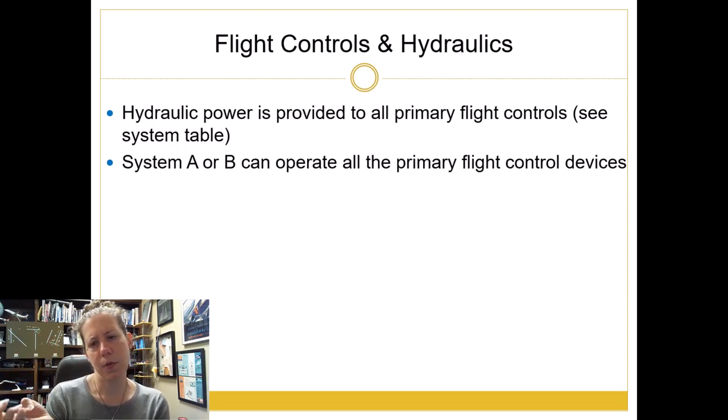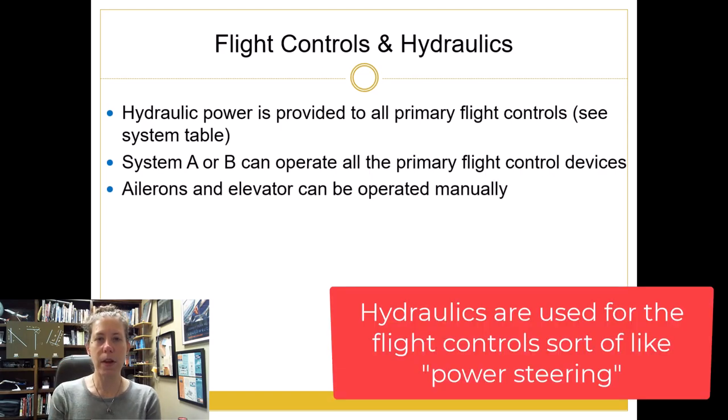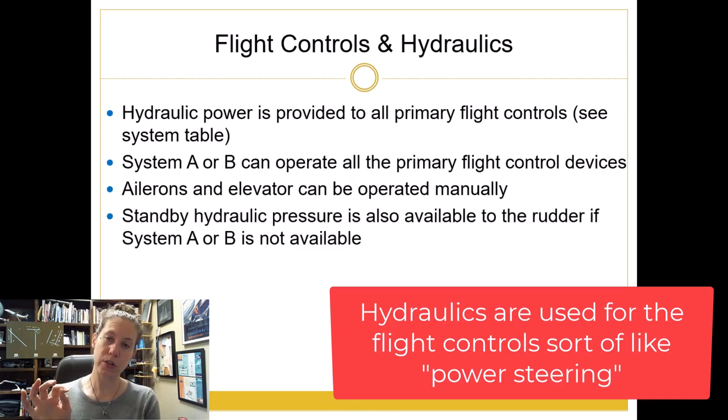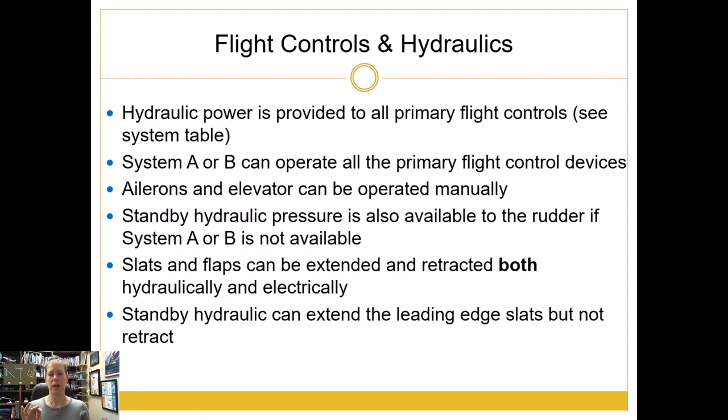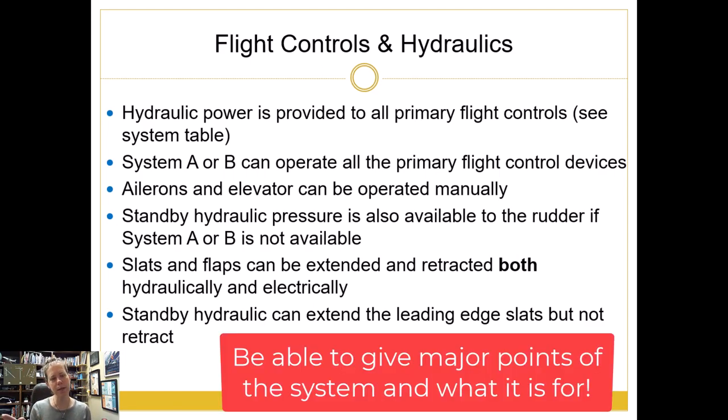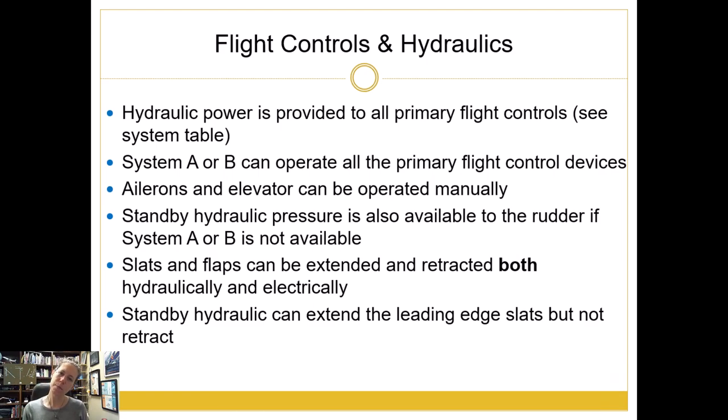Finally, as just some more points to summarize this, we have hydraulic power that goes to all of our primary controls, like I just mentioned. But then ailerons and elevator can be operated manually. The standby hydraulic pressure does go to that rudder in case A or B, or both are not available. Our slats and our flaps, they can be extended and retracted both hydraulically and electrically. But that standby hydraulic can extend our leading edge slats but not retract them. So these are good points. I would just make yourself some points about this. Explain it to your dispatch examiner. Include helpful hints like that the system pressure is normally 3000 PSI. It is pressurized with the pneumatic system. We use hydraulics to assist the crew in flying the airplane. And then kind of go through a little bit of what is on System A, what is on System B, and the standby system and how those different systems are powered.